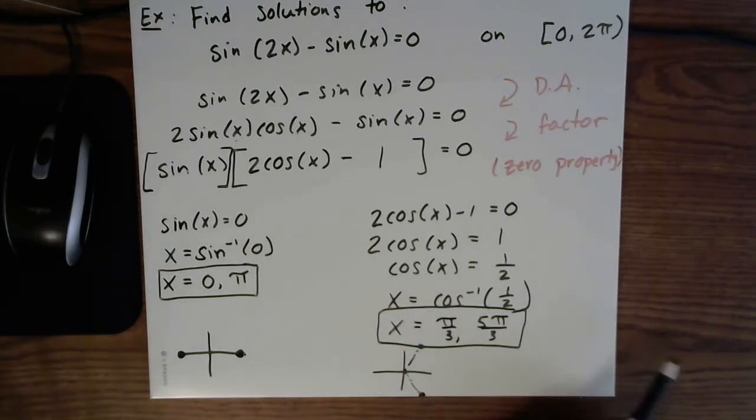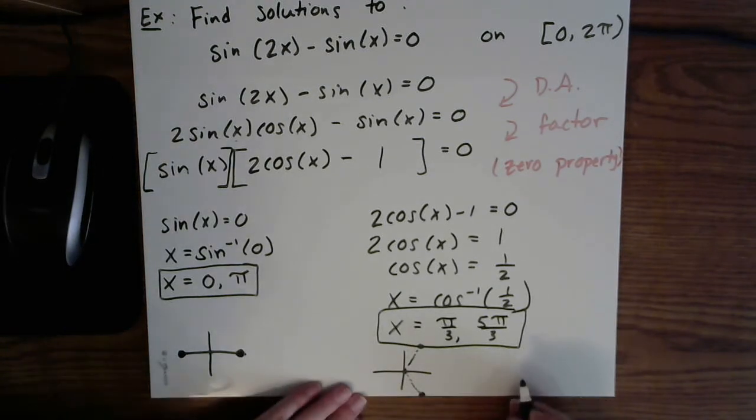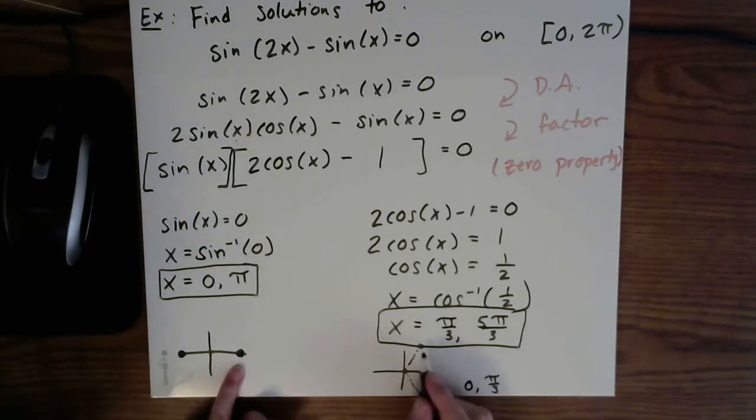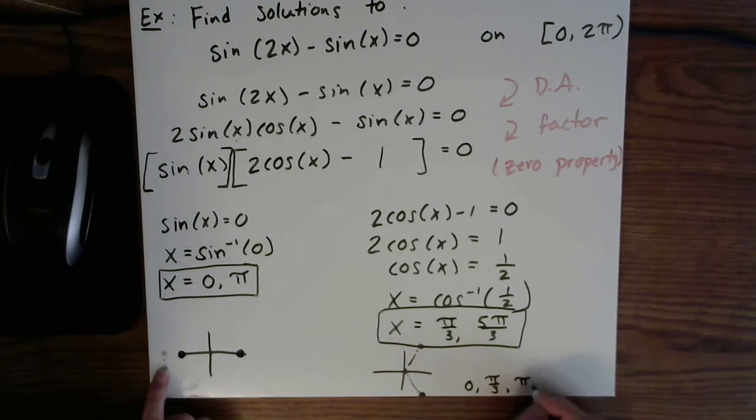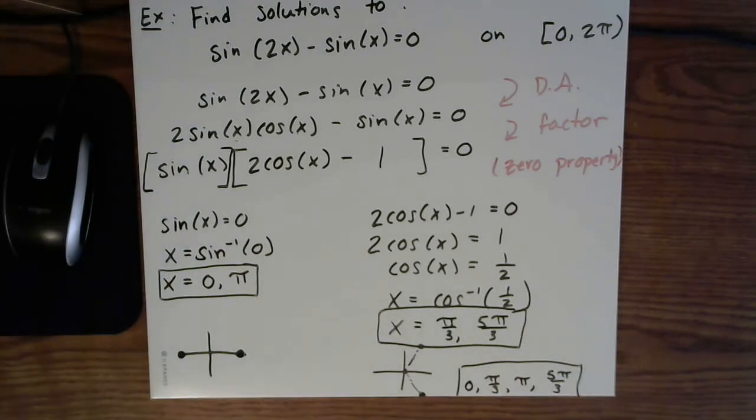So notice for this example, we ended up with four solutions. In fact, if you'd like, maybe you could write them in order. Zero, π/3, pi, and then finally 5π/3. So I wrote them in order of increasing value.